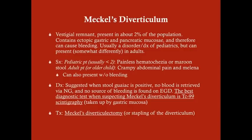Pediatric patients classically present with Meckel's diverticulum as painless hematochezia or maroon stool — bright red blood per rectum or maroon stool. With adults or older children, it can cause crampy abdominal pain and melena. The reason toddlers get hematochezia is a faster intestinal transit time, so blood moves through quickly. In adults, things move more deliberately, so by the time it passes, it's melena. In adults, there is often crampy abdominal pain associated with the melena.